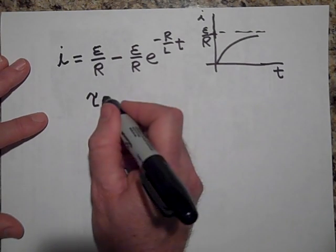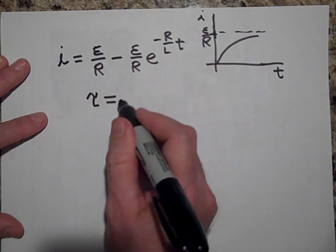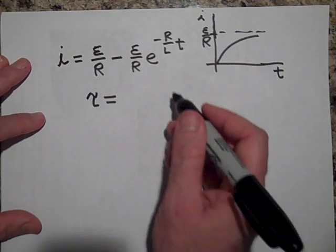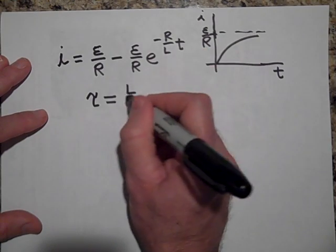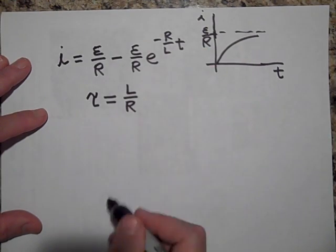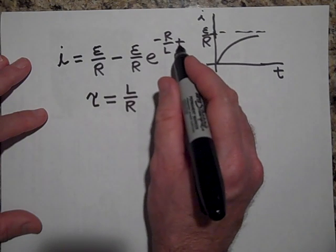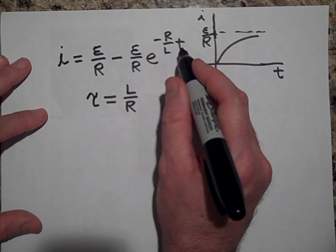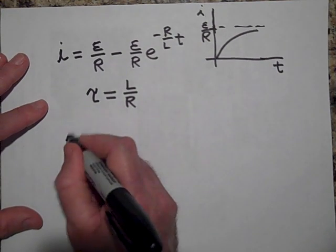And this time constant, it's not going to be RC like the RC circuit was, it's gonna be L over R. And you'll see why it's L over R. Look what happens when for time I put in L over R.